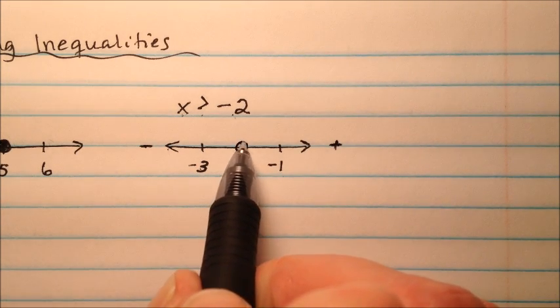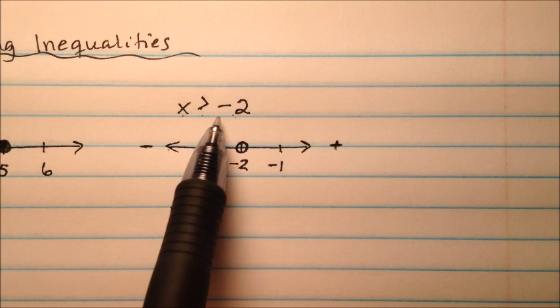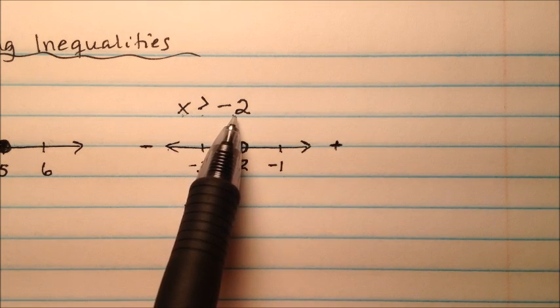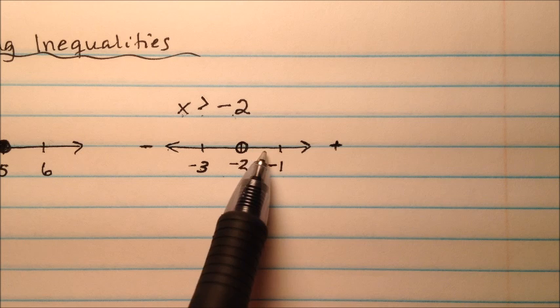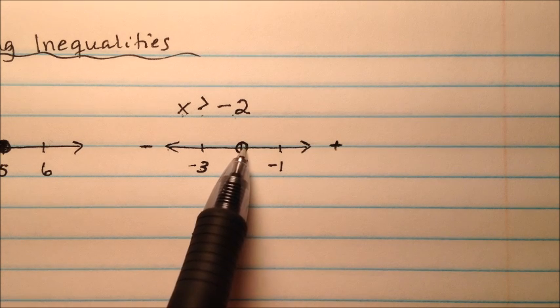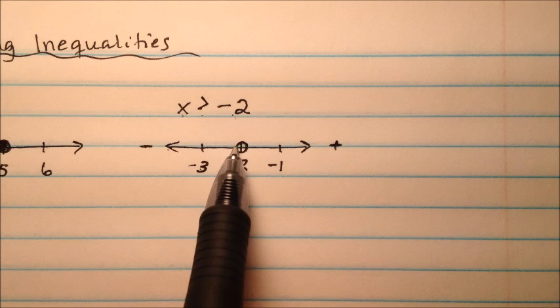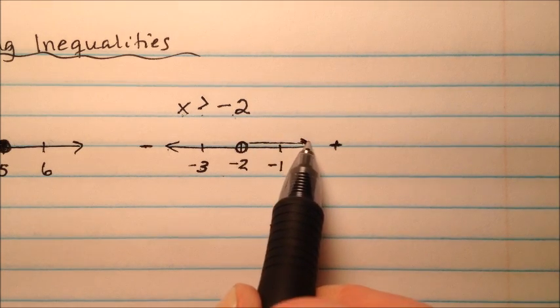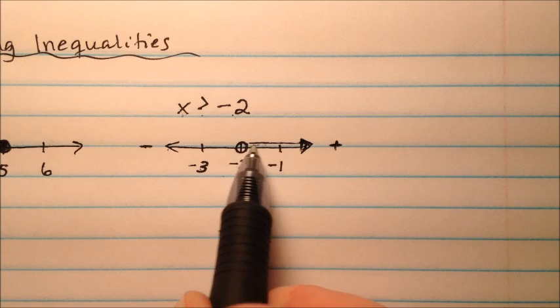So again, I'm going to put an open circle. And the reason is, it does not include negative 2. We're just saying it's everything bigger than negative 2. So this could be negative 1.99999, which is right up against there. That would be included. But not negative 2. So we're going to put an open circle. And we're going to go to the right, because that's the greater than side. And fill in that triangle.